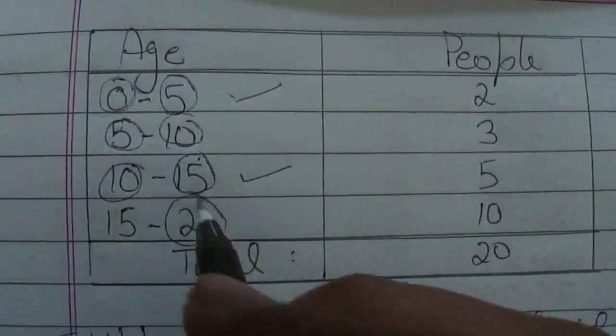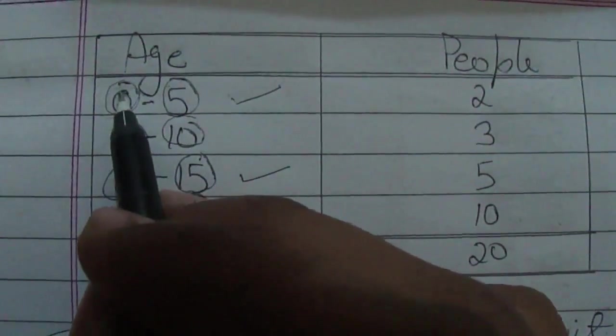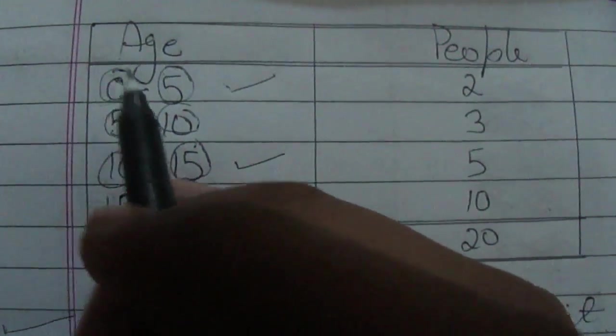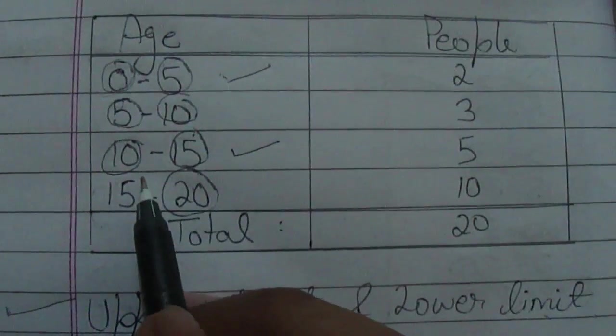Hence, subtracting 0 from 20, we get its range. Therefore, range is highest value minus lowest value.